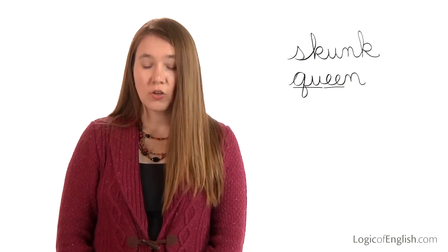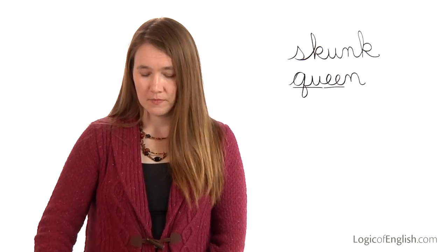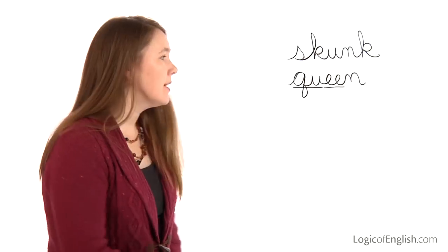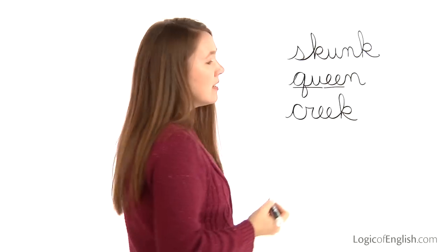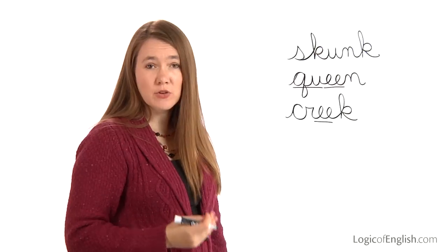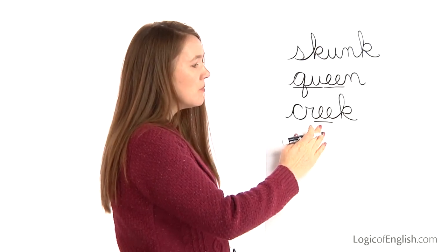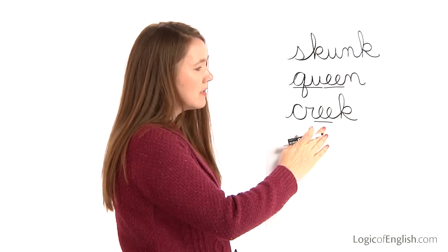The next word is creek. The creek flooded after the heavy rain. Creek. Let's sound it out together. K, r, e — this will be an e-double-e — k, this will be a tall k. Go ahead and write creek. K, r, e, k. Now we can underline the e-double-e. Why did we not use a two-letter k at the end of creek? Because it's before a double vowel that has two letters and is saying its long sound. So we use the tall k.